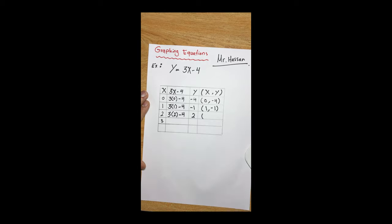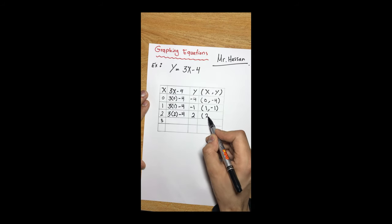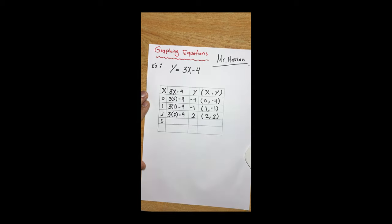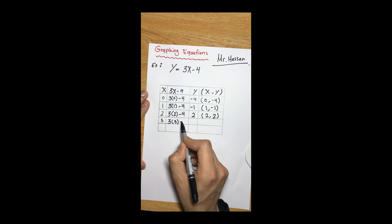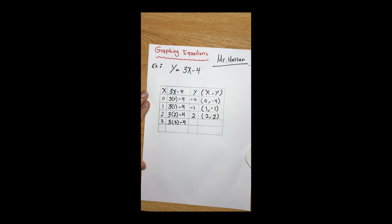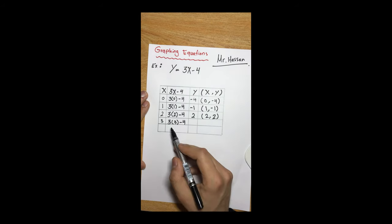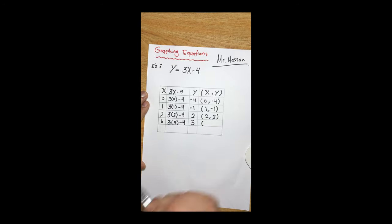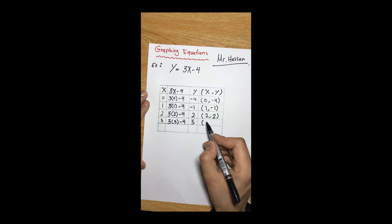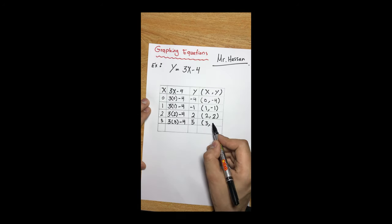So the next ordered pair is (2, 2). Finally, for x equal to three: 3 times 3 minus 4 — three times three makes nine, and nine minus four gives us five. So if x is equal to three, then y is positive five.